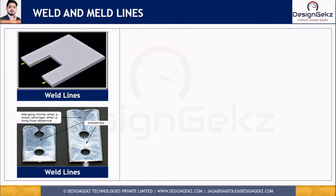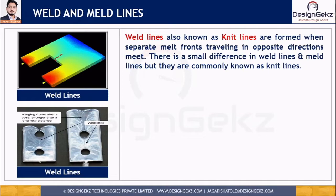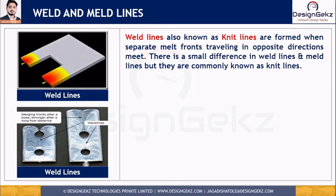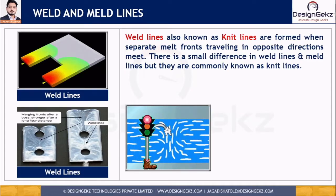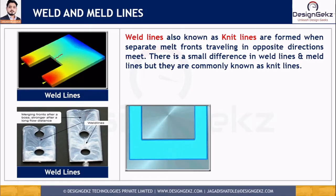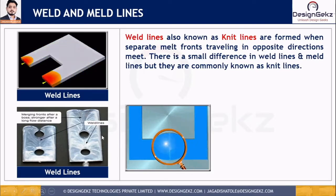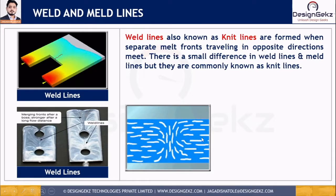The weld and weld line defect is also known as a neat line defect, which forms when separate melt flow fronts traveling in opposite or in the same direction meet. The weld line is a line that appears on a part when molten plastic meets as it flows from different parts of the mold. It also forms when the melt flow fronts are parallel to each other, as shown in this image — so the flow can be parallel, perpendicular, or in the opposite direction.